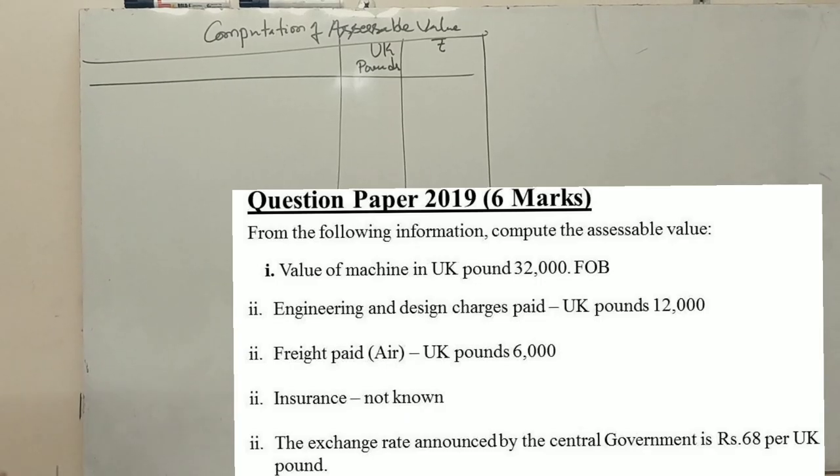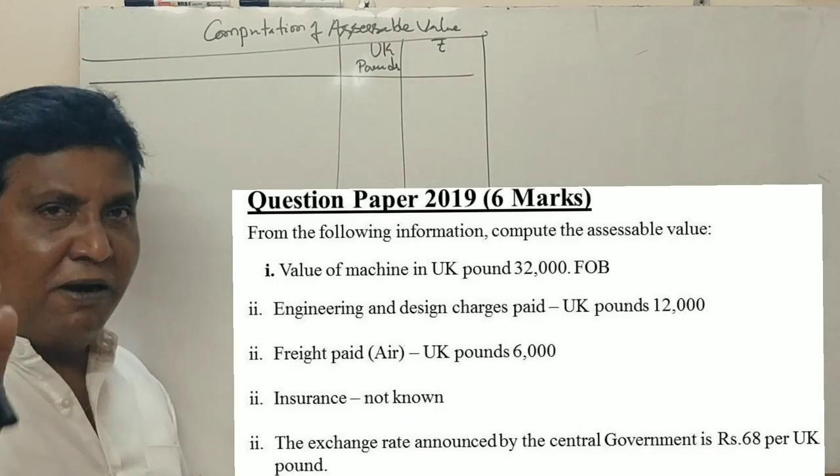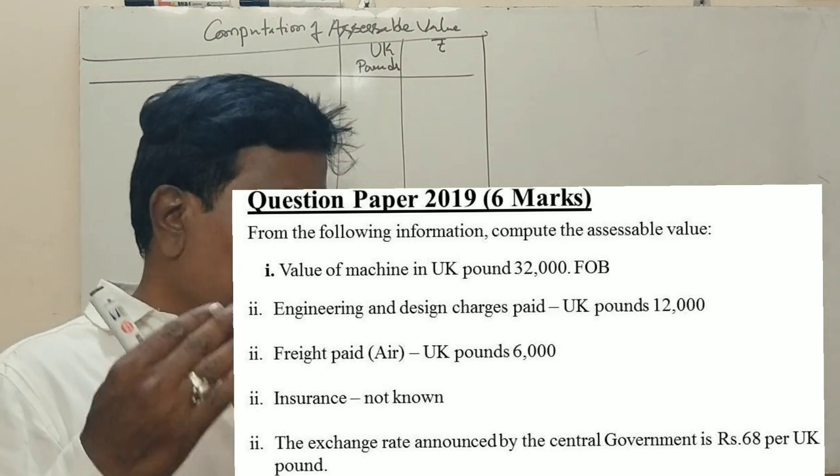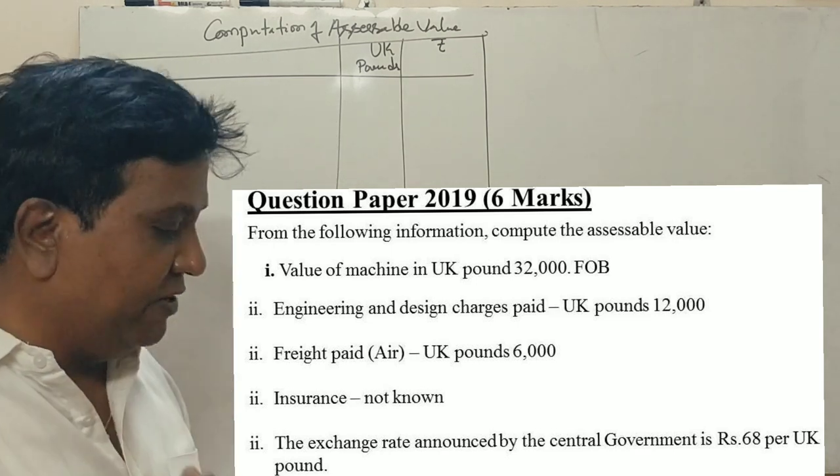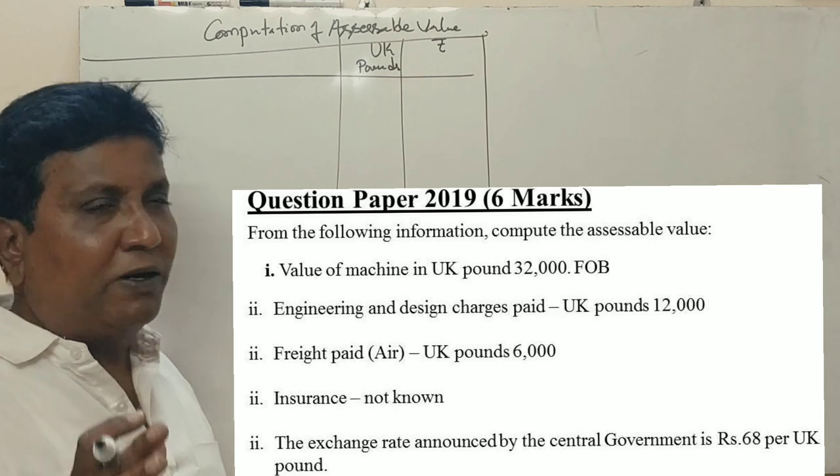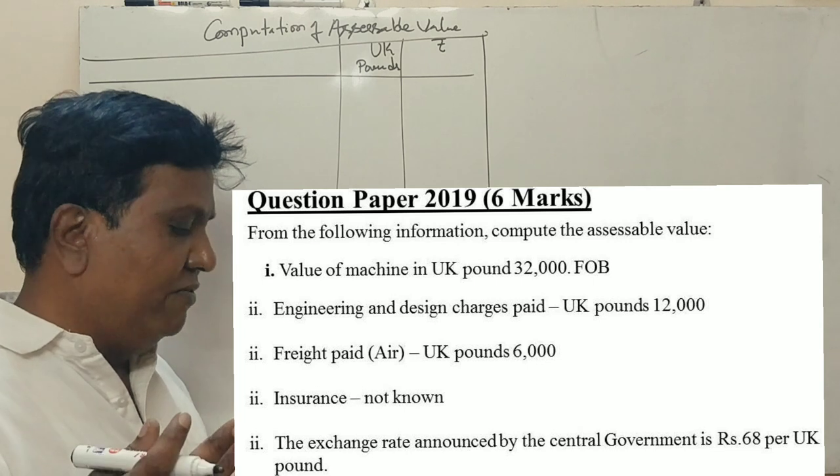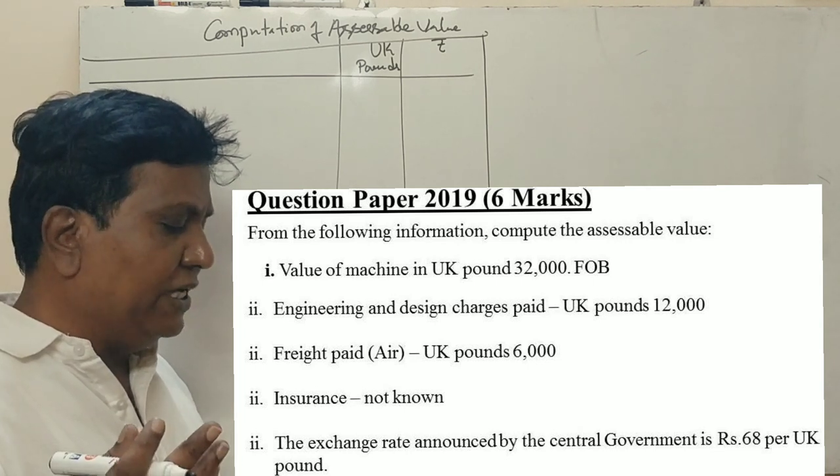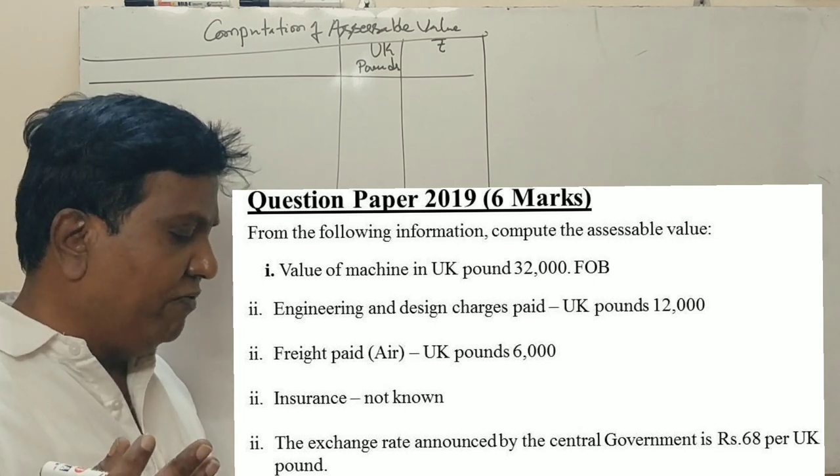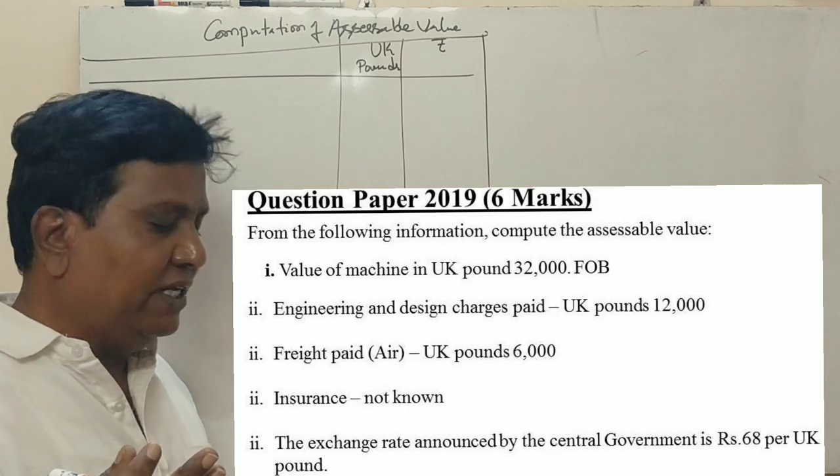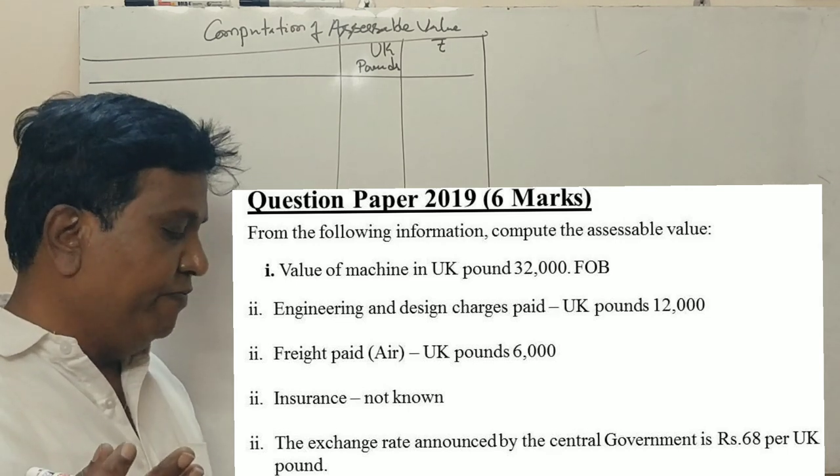Friends, 2019, there is a six marks question. Now, first six marks. From the following information, compute the assessable value. Value of the machine in UK pounds is 32,000 FOB.